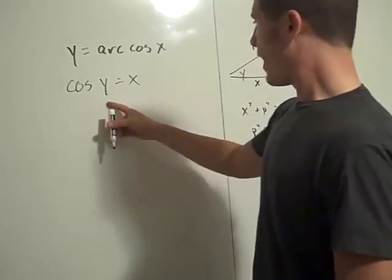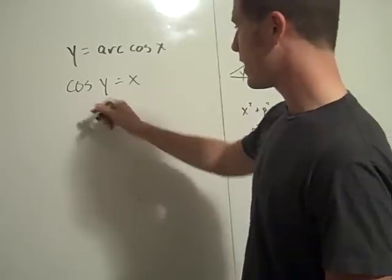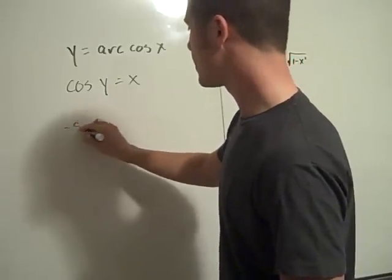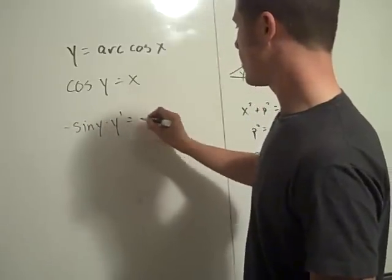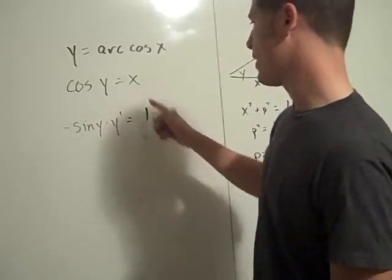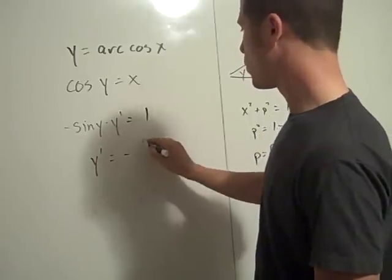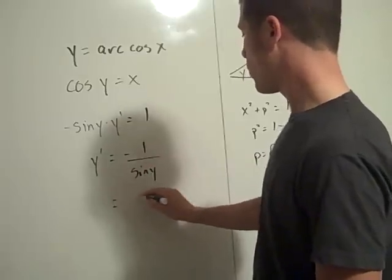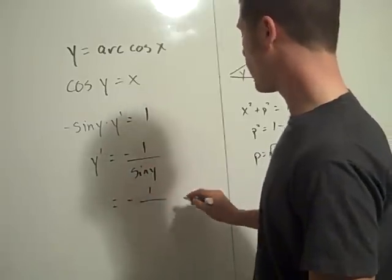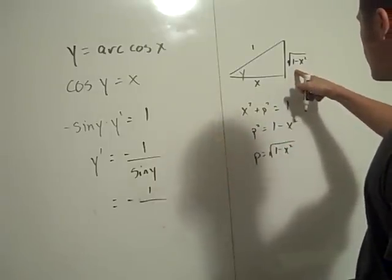So I have the derivative of cosine is minus the sine of y. This is times y prime, and this is equal to 1, because the derivative of x is 1. And so y prime is minus 1 over sine y, which is minus 1 over the square root of 1 minus x squared.